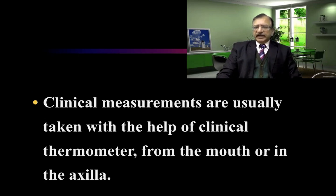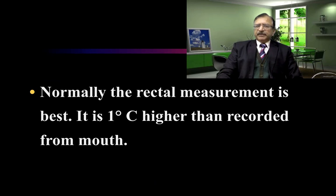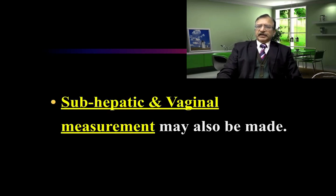Clinical measurements are usually taken with clinical thermometers from the mouth or in the axilla. While at autopsy, the temperature of the dead body is measured by taking the rectal temperature. The normal rectal temperature is the best measurement and is one degree higher than the recording from the mouth. In certain conditions, sub-hepatic or vaginal measurements may also be made.